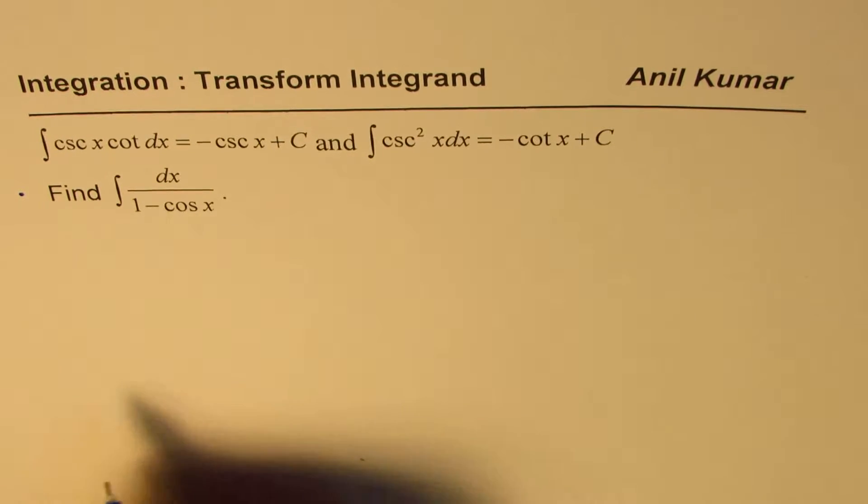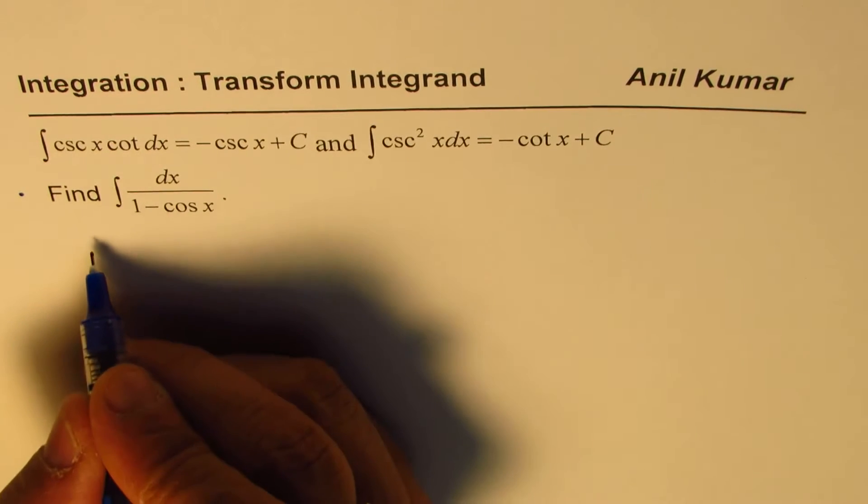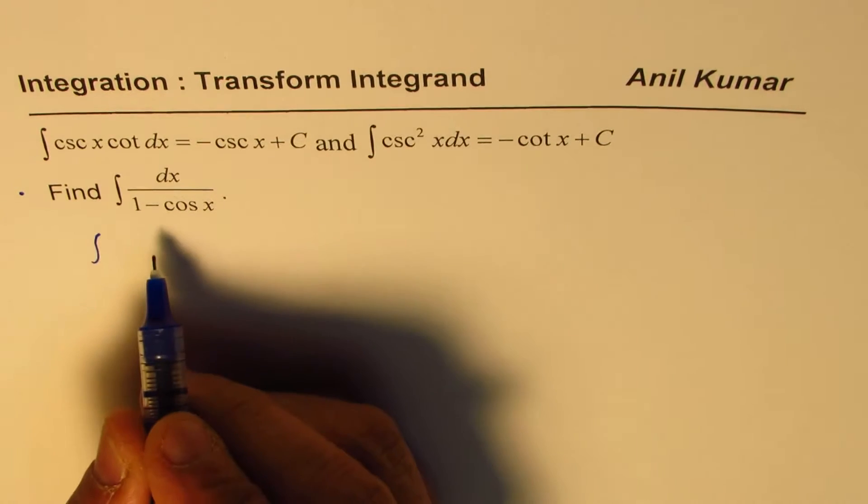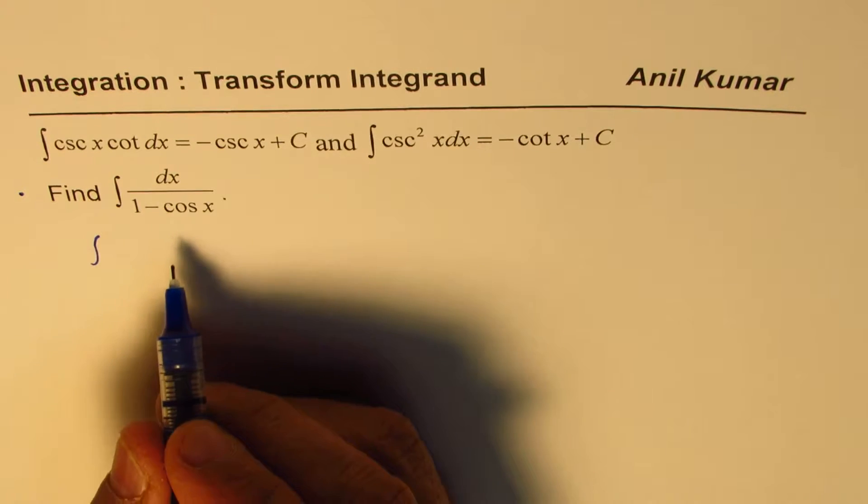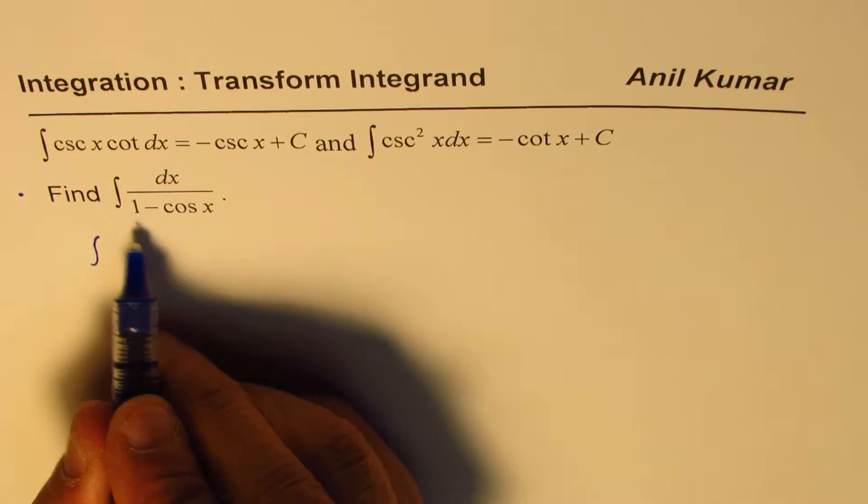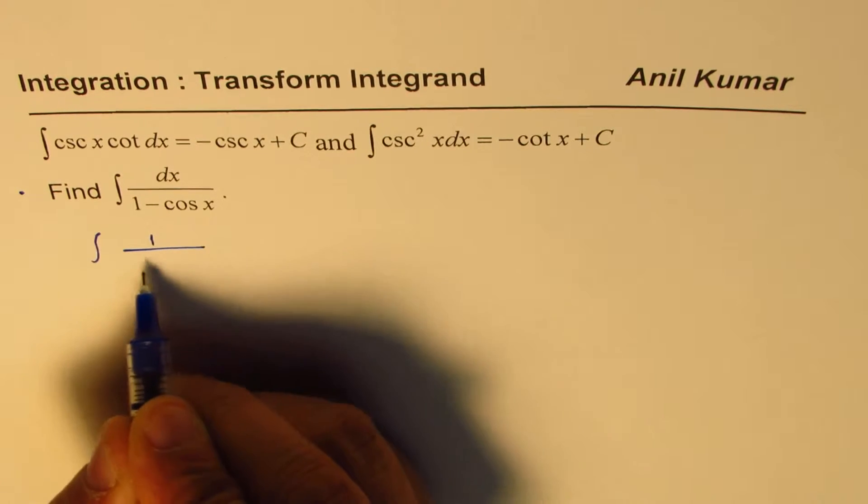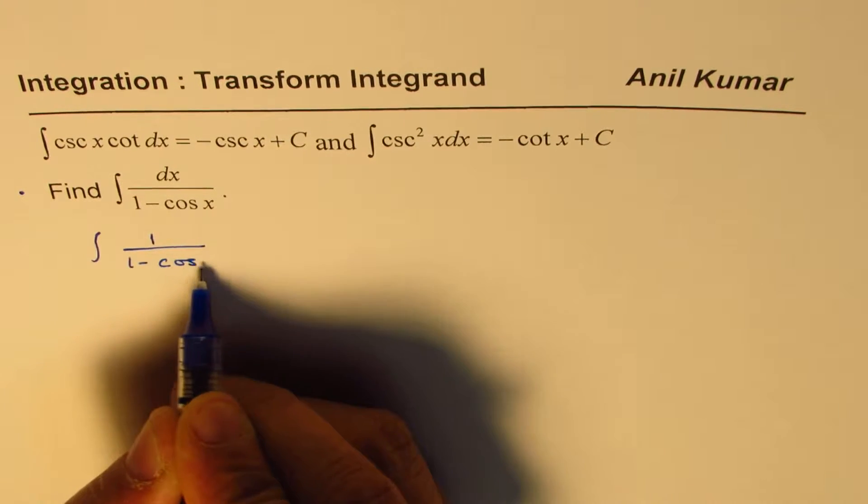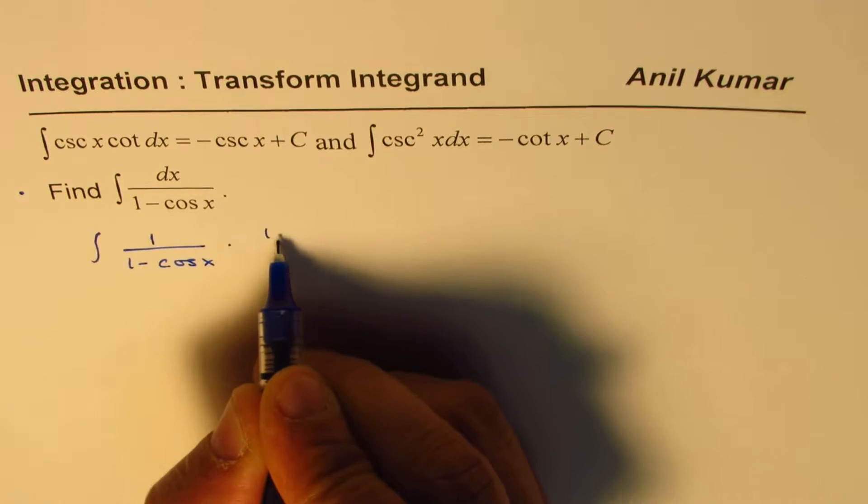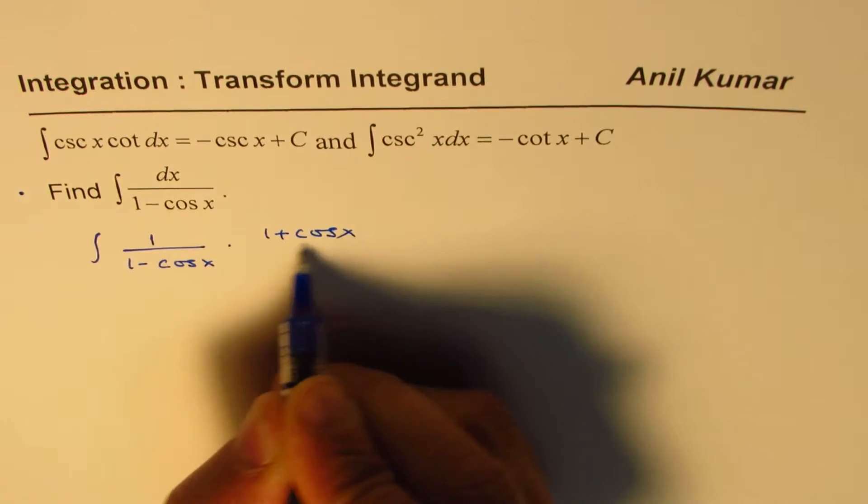Now, in such cases, we could do rationalization. So we'll use the rationalization technique to solve this question. Rationalization means that we'll multiply and divide by the conjugate of this denominator. So what we have here is 1 minus cos x, we'll multiply and divide by 1 plus cos x.